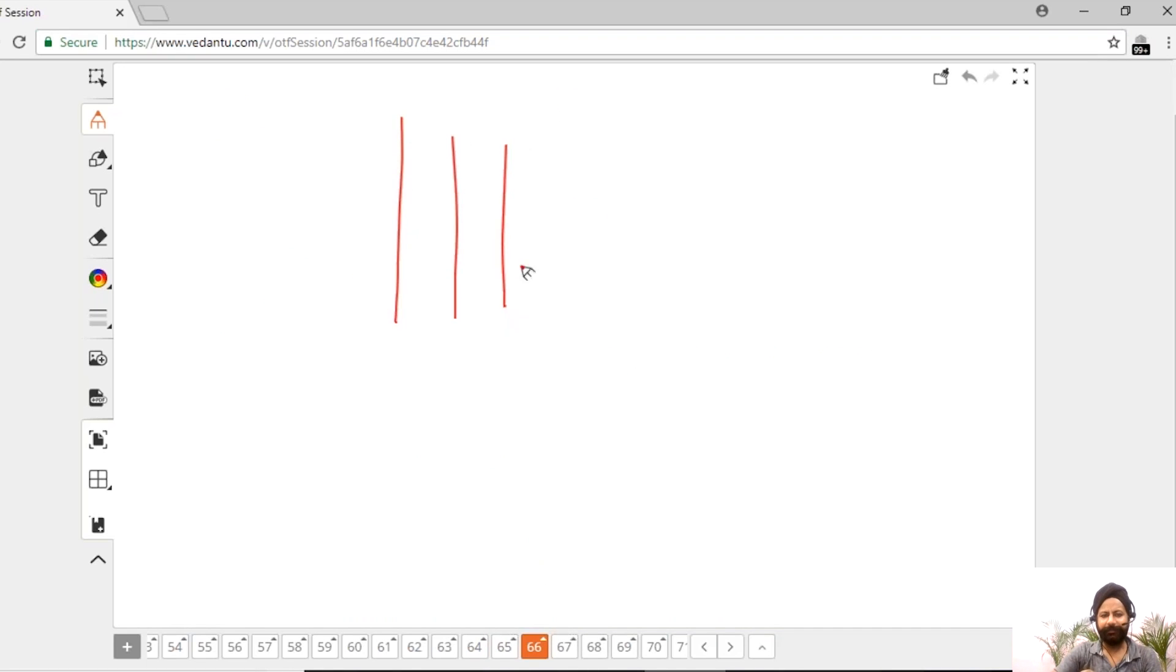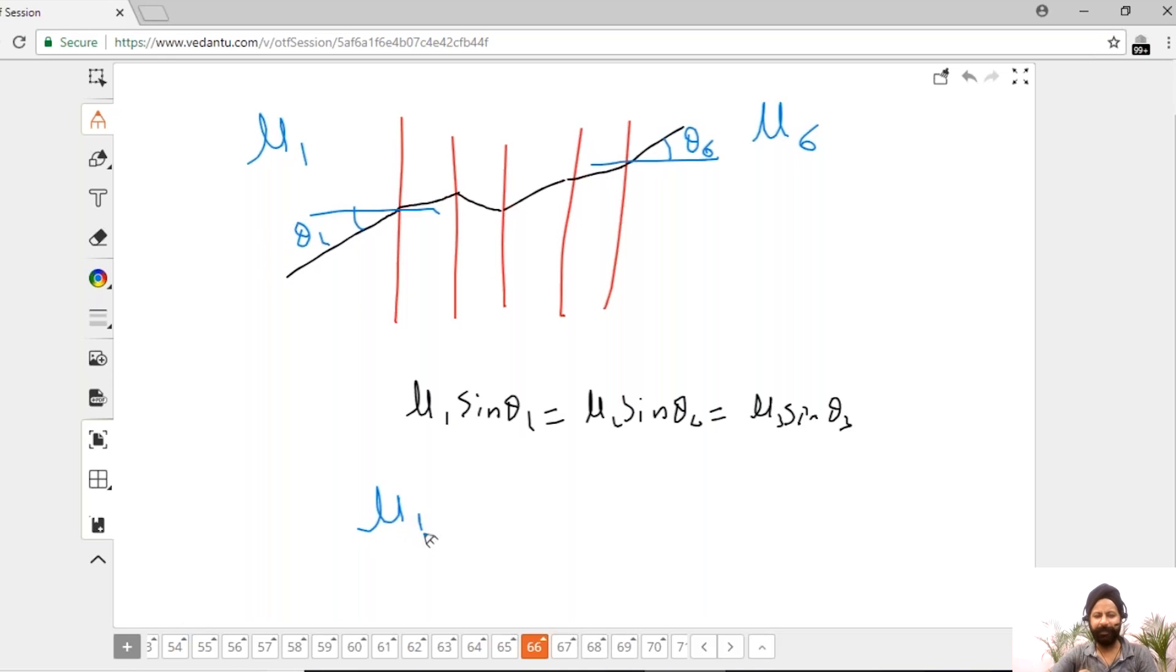And then maybe you have more of these surfaces. All you know is μ₁ sine θ₁ is equal to μ₂ sine θ₂ is equal to μ₃ sine θ₃. You keep writing it. You don't really care what's happening where. So now if I'm interested in, I know medium one, two, three, four, five, six. μ₆ or μ₁ here, this is θ₁, this is θ₆. I don't care what happened in between. I can say μ₁ sine θ₁ is equal to μ₆ sine θ₆. All the stuff in between doesn't matter. Nothing matters at all. All I care about is μ₁ sine θ₁ is μ₆ sine θ₆.